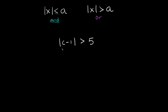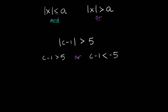Now here we have the absolute value of c minus 1 is greater than 5. We have a greater than symbol, so we're going to use 'or' this time. Split into two inequalities: the first one is c minus 1 is greater than 5, and for the other one, flip the inequality and the sign: c minus 1 is less than negative 5. We put the word 'or' between them.